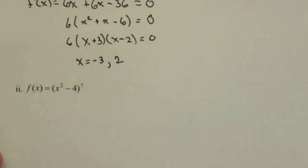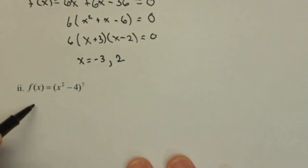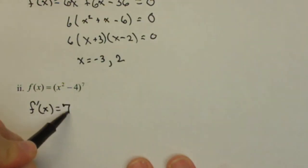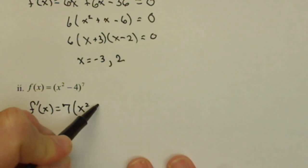Let's go down to this next one. Again, first step, find your derivative and then set it equal to 0. So f'(x) is 7, leave the inside alone. We've got a chain rule.